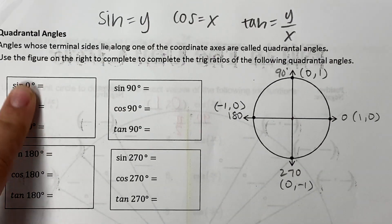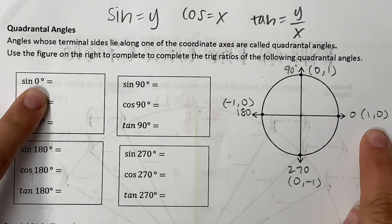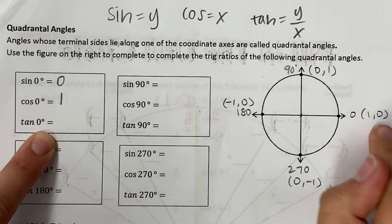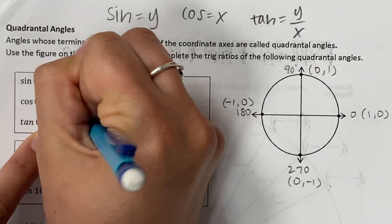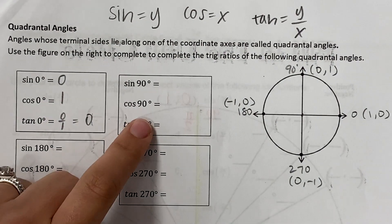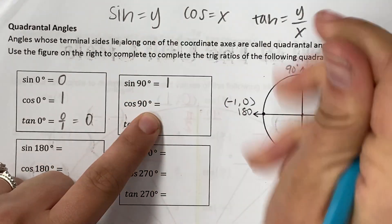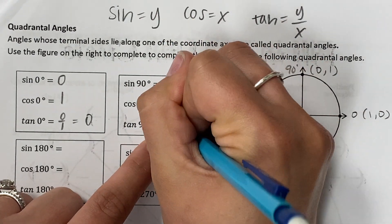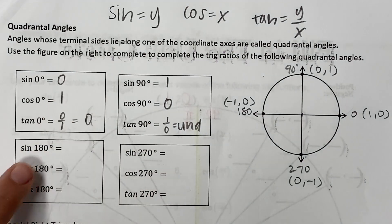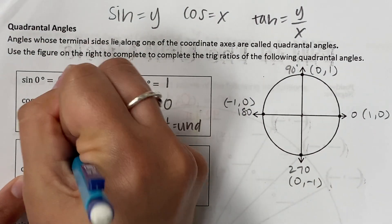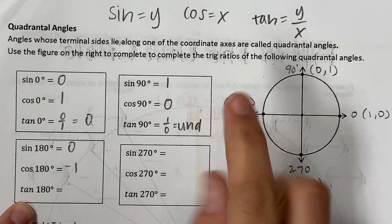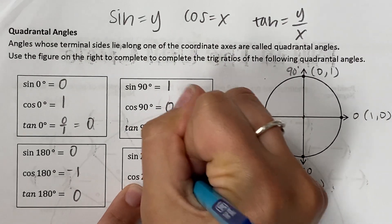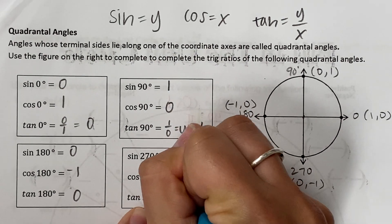At 0 degrees: sine is y, so sine is 0. Cosine is x, so cosine is 1. Tangent is y over x: 0 over 1 is just 0. At 90 degrees: sine is y, so 1. Cosine is x, so 0. Tangent is y over x: anything over 0 is undefined. At 180: sine is y (-1's y = 0), cosine is x (-1). At 270: sine is y (0, -1's y = -1), cosine is x (0), and tangent is y over x — that's over 0, so undefined.